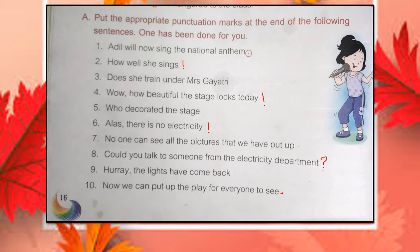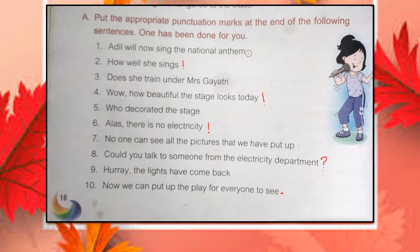Number six: 'Alas, there is no electricity.' — expressing sadness, so exclamation mark here. Number seven: 'Could you talk to someone from the electricity department?' — this is an asking question, so we put a question mark. Number eight: 'Now we can put up the play for everyone to see.' — this is a telling sentence, so we put a full stop.